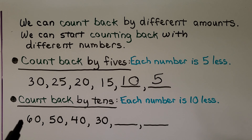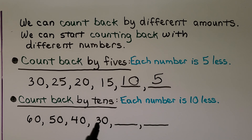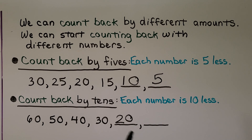We can count back by tens — each number is 10 less. We have 60, 50, 40, 30. Do you know what comes next? If you said 20, you're right. And the next missing number would be 10 less than 20 — if you said 10, you're correct.